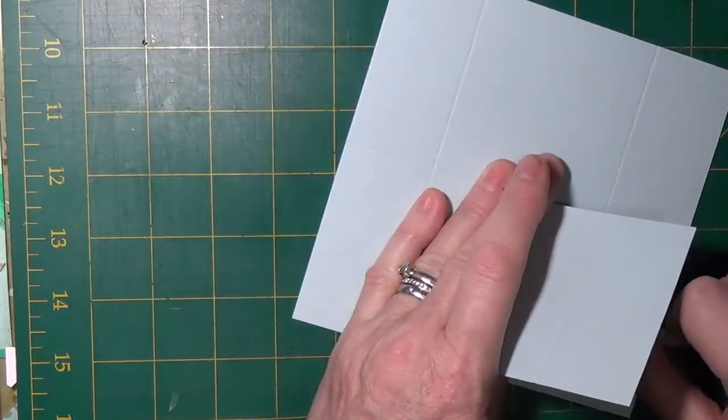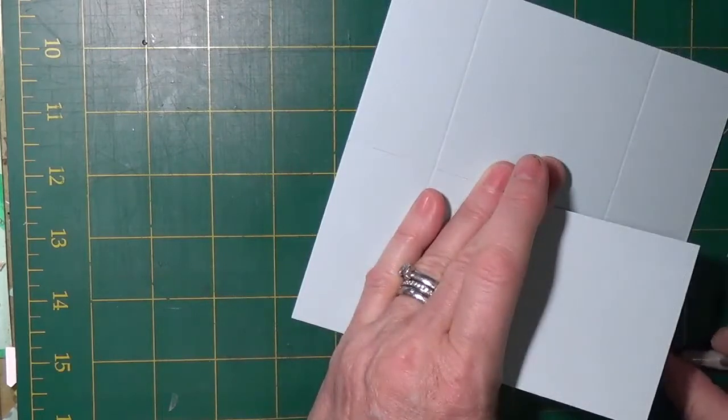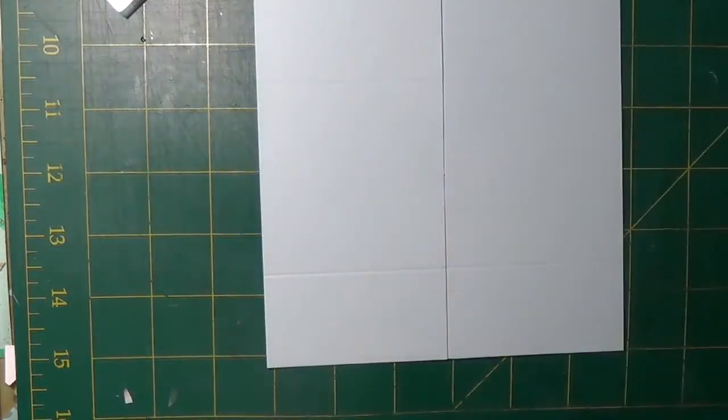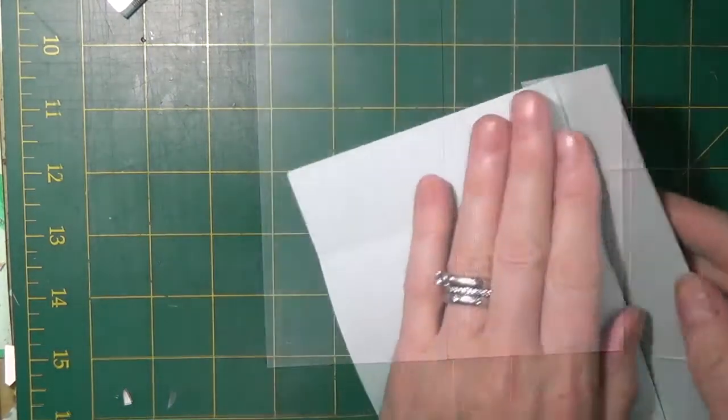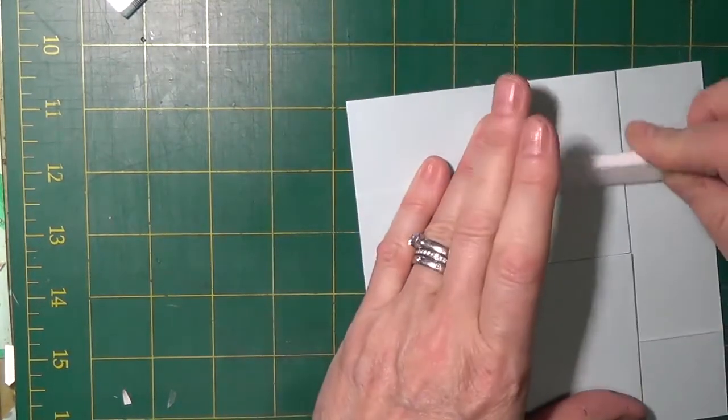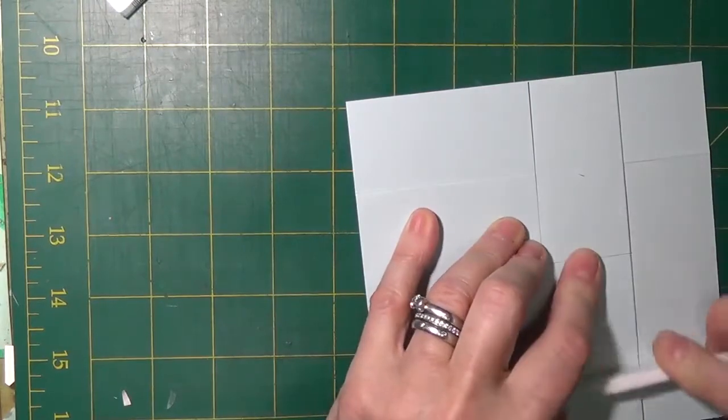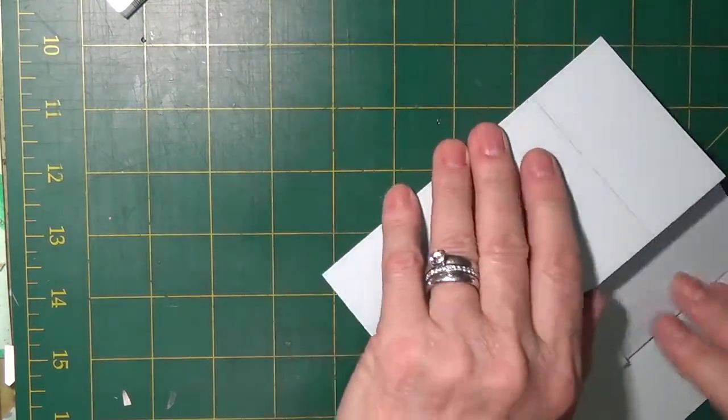Once you remove the two strips on the bottom portion that piece should lay down perfectly but make sure that you line up the corners and then you have to burnish the score lines.